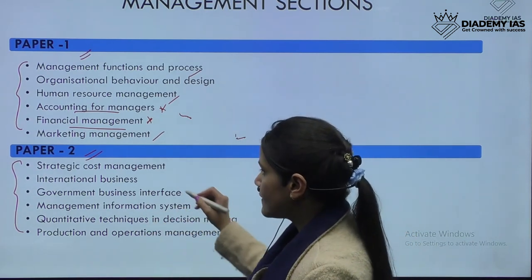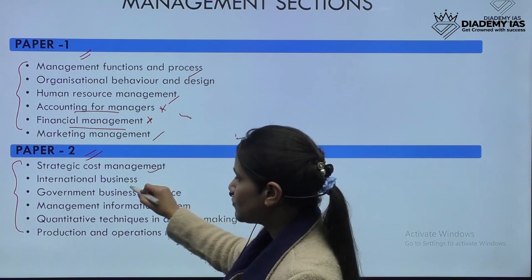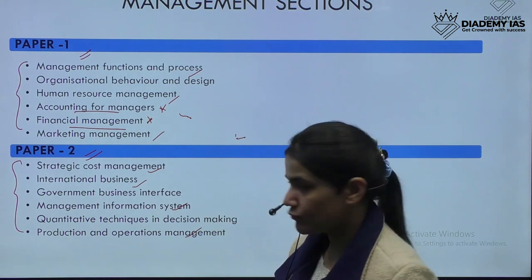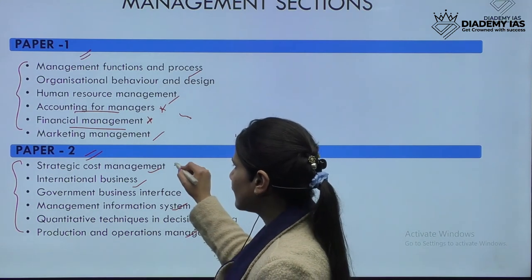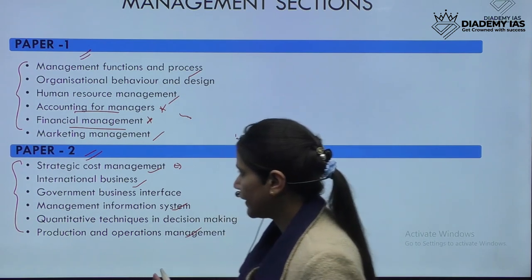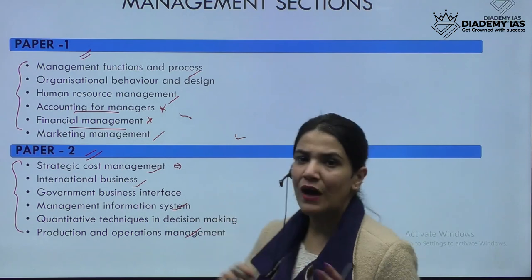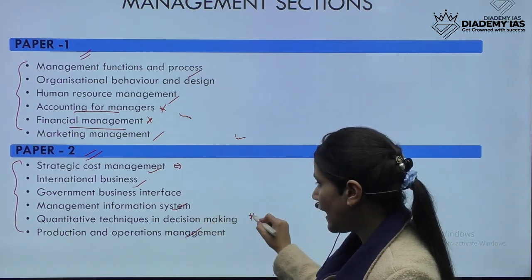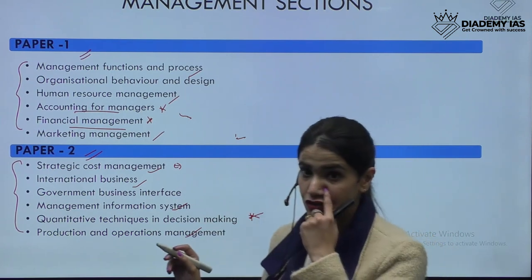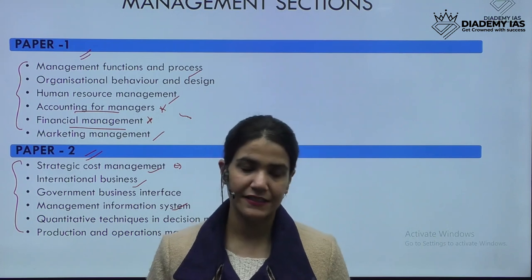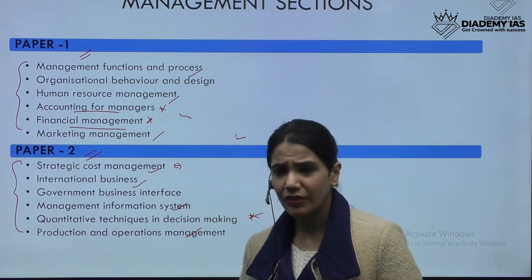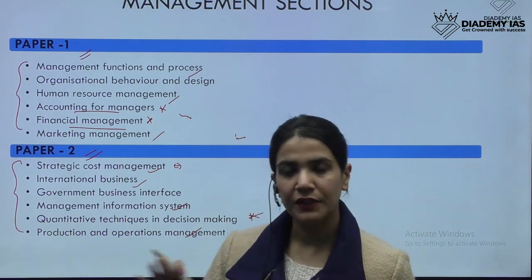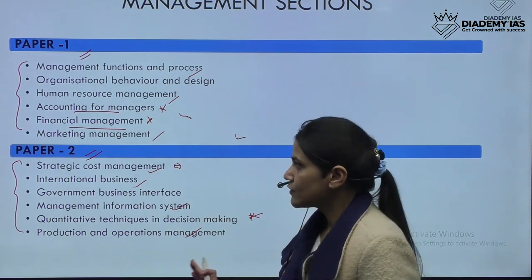Paper 2 also has six subjects. Strategic cost management, international business, MIS, and production and operations management are the theoretical subjects. There are certain numericals in SCM related to cost accounting, but you don't need to focus too much on the numerical part there. For quantitative techniques in decision making, there are statistics-based numericals — hypothesis testing, p-charts, etc. — so once you start practicing, you can easily score in this subject.